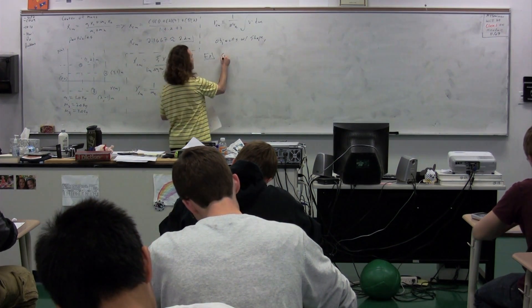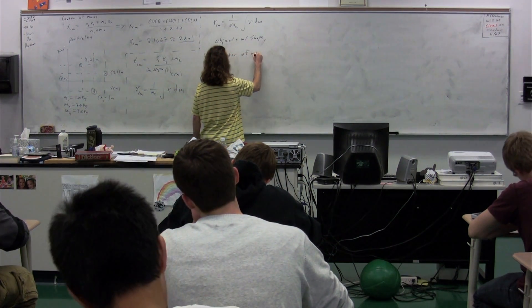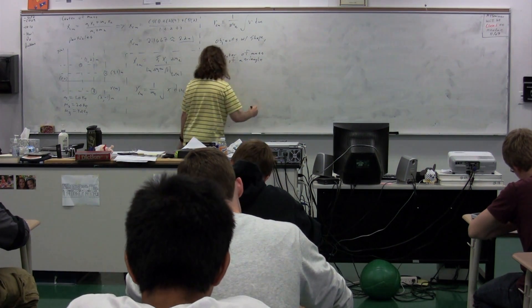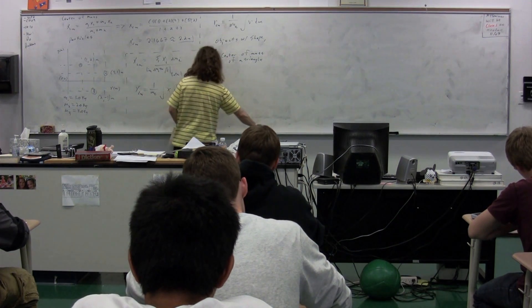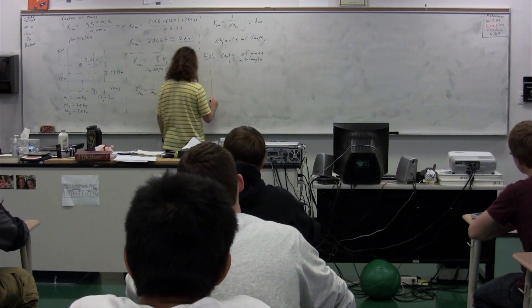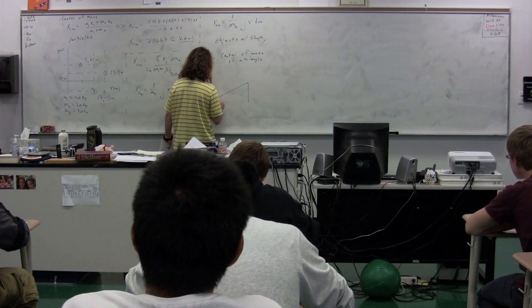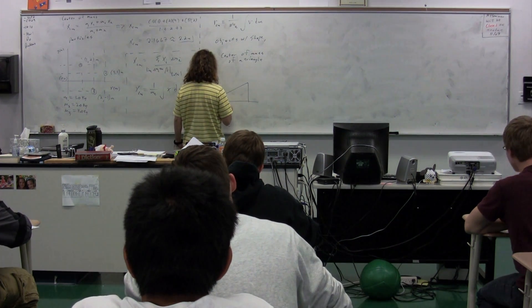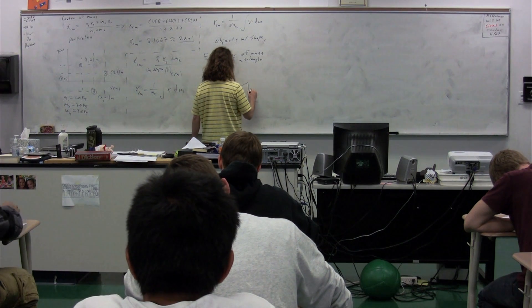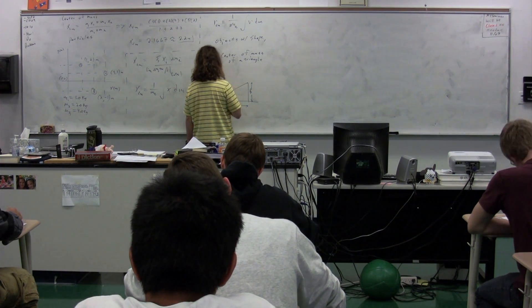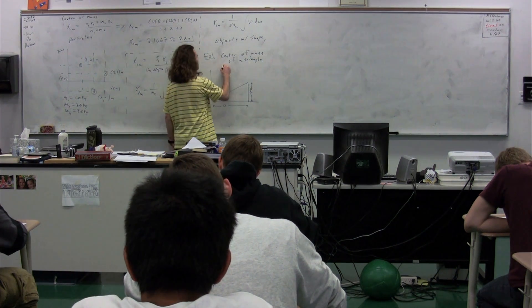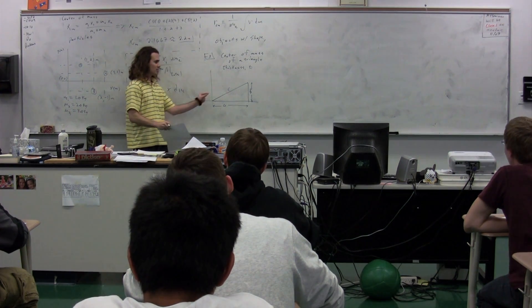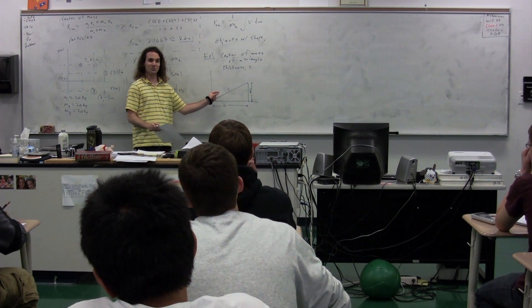Let's take a triangle. We're going to figure out the center of mass of a triangle. We have a triangle that looks like this. We're going to have various sides of this triangle: side A, side B, and the hypotenuse is going to be side C. The triangle is also going to have a thickness T, which is in this direction.